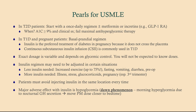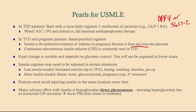Some pearls — this is a recap too. In type two diabetic patients, start with the once-daily regimen and continue metformin or incretins like GLP-1 receptor agonists. You can also do DPP-4 inhibitors or SGLT-2 inhibitors. With type one diabetic and pregnant patients, we do the basal-prandial regimen. Insulin is the preferred treatment of diabetes in pregnancy because it does not cross the placenta — metformin is probably safe, but insulin is still preferred. Continuous subcutaneous insulin infusions — pumps — are commonly used in type one diabetes; you don't need to know those. Exact insulin dosage is variable and depends on glycemic control, so you will not need to know doses for your exam. The insulin regimen may and often is adjusted — if the patient takes up an exercise regimen, they're going to need to change their insulin regimen, so they generally have a specialist they can go to.